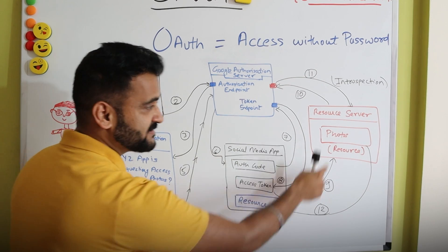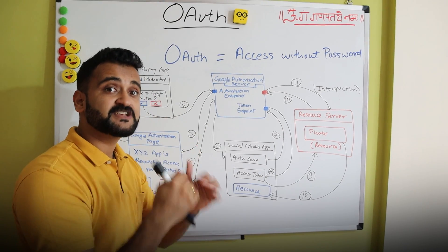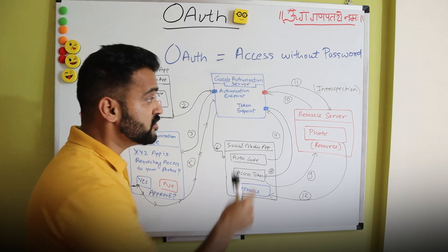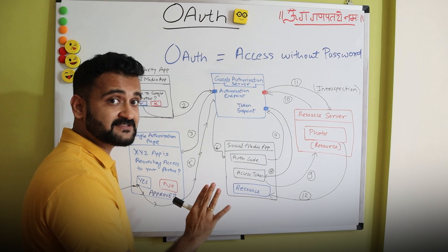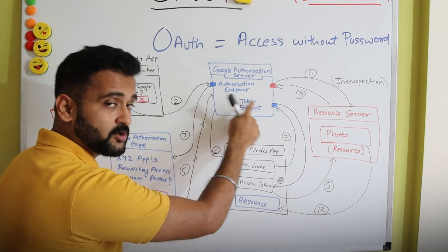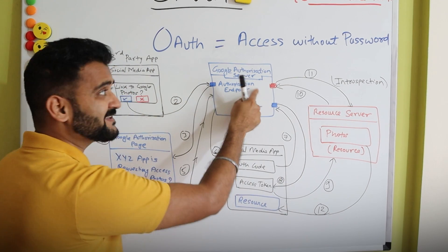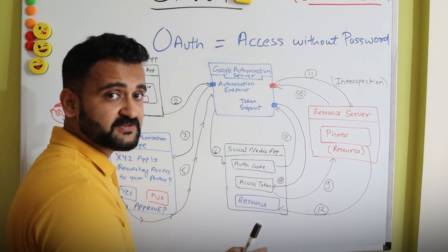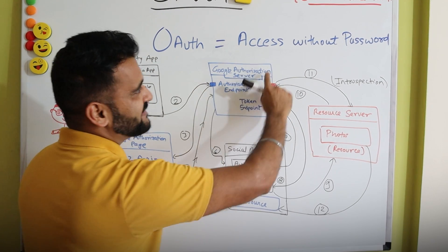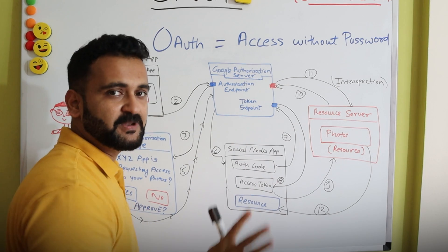The access token is the actual key to the locker. The social media application is now authorized and has the access token to go to the actual resource server — which holds the user's photos — at step nine, and provides this access token to request the photos. However, since I am taking Google as the epitome of security, even the resource server will not trust the access token by itself. The resource server goes back to the Google authorization server in a process called introspection, wherein it asks whether this access token provided by the media app is valid or not.